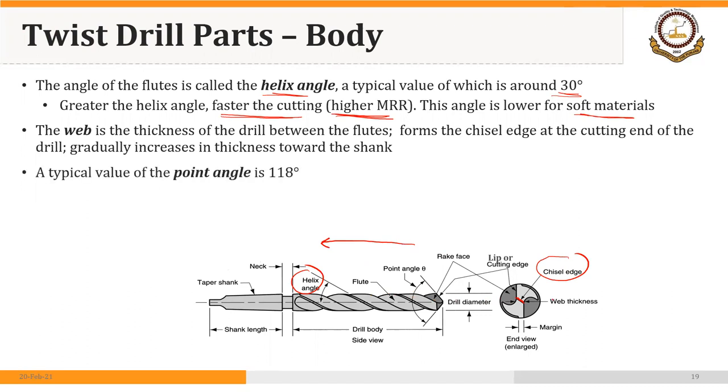You can see one very important part of the twist drill: the cutting edge. There are two cutting edges in this case. These are the cutting edges. The cutting edge is also called the lip. So there are two lips or two cutting edges.